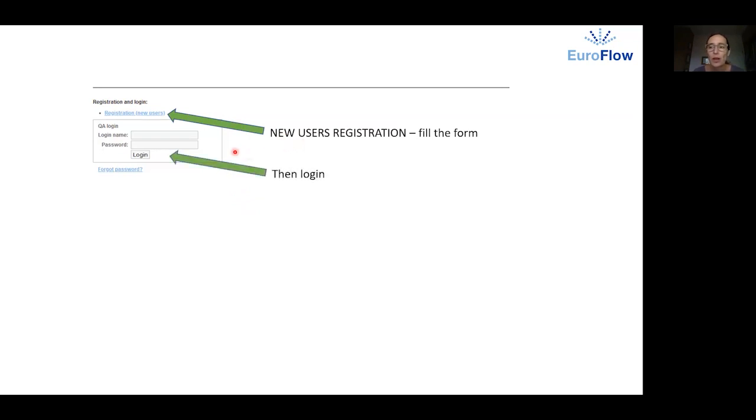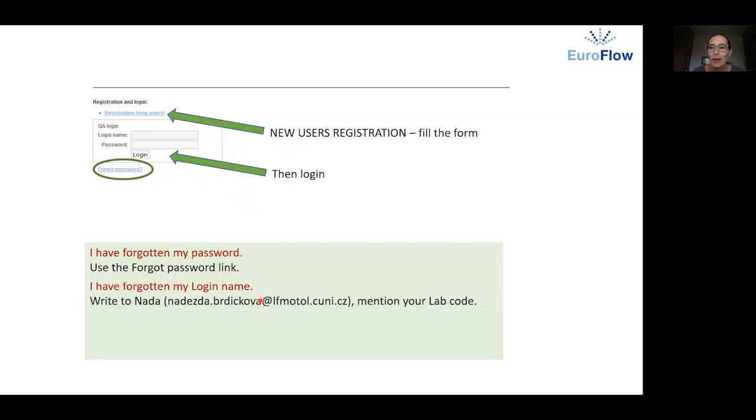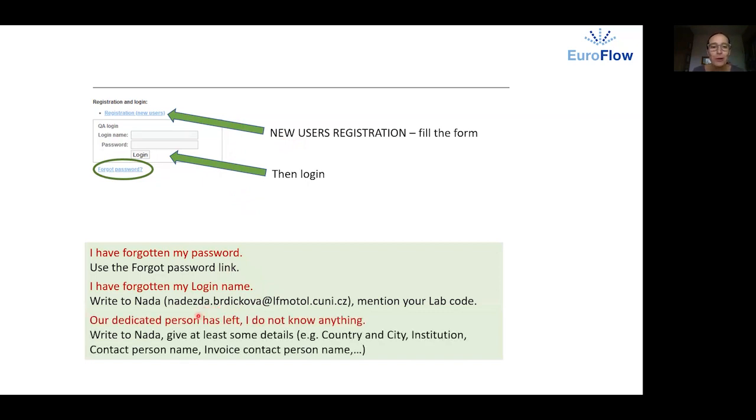When registered you log in to your home page here. If you forget your password you use the forgot password link. If you forget even your login name you have to write to me. Please mention your lab code so that I can find your lab easily. If you do not know anything then write to me but please give me at least some details according to which I can find your lab. These can be your country and city, institution, contact person name or invoice contact person name.